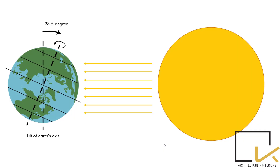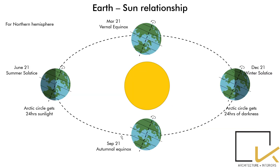Tilt of the Earth's Axis. Earth is tilted at an axis of 23.5 degrees. There are two important terms to know. Please note I am talking from the perspective of the Northern Hemisphere — for the Southern Hemisphere, the case is the exact opposite.